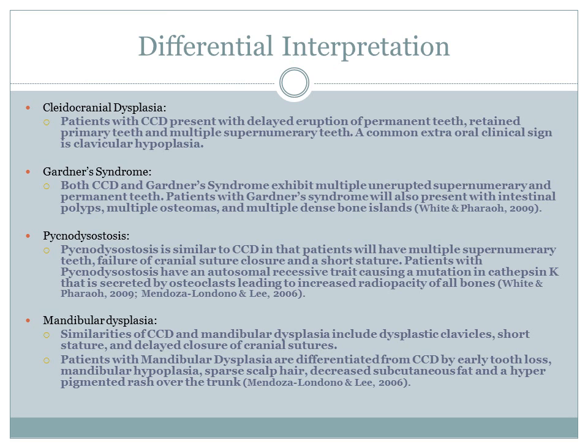The differential diagnosis in decreasing order of likelihood begins with CCD itself, where patients present with delayed eruption of permanent teeth, retained primary teeth, multiple supernumerary teeth, and clavicular hypoplasia. Gardner Syndrome is also considered, as both conditions exhibit multiple unerupted supernumerary and permanent teeth; however, Gardner Syndrome additionally presents with intestinal polyps, multiple osteomas, and multiple dense bone islands.